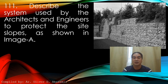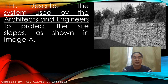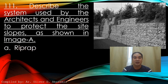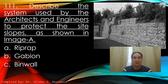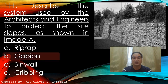Question 111: Check the image. Describe the system used by architects and engineers to protect the site as shown in the image. A) Riprap, B) Gabion, C) Bean wall, D) Cribbing. Answer: B) Gabion.